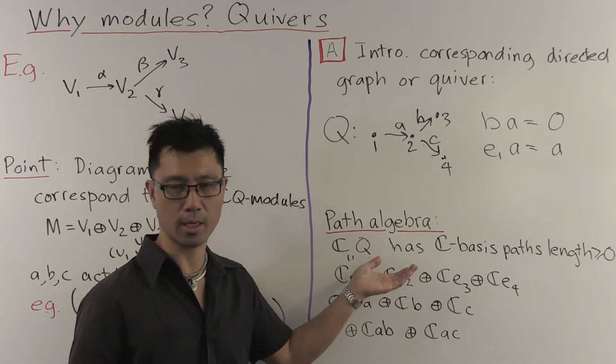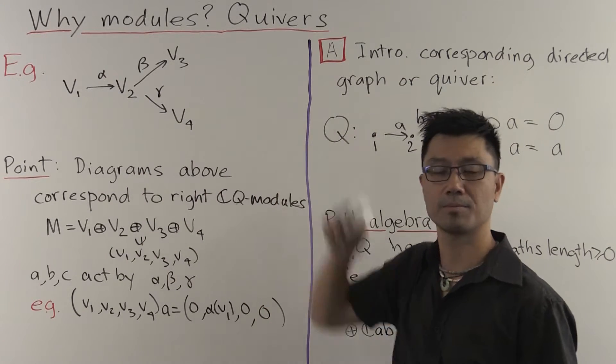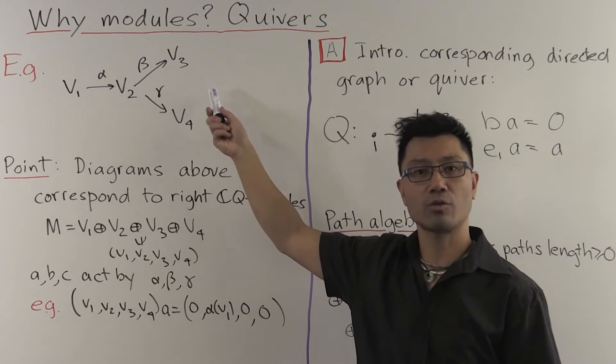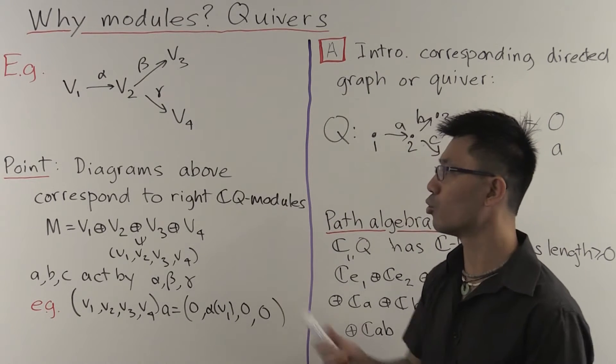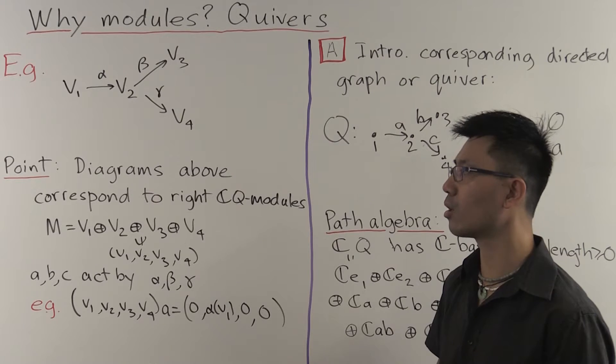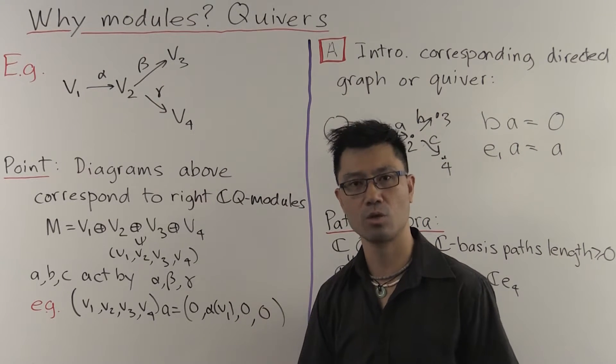And this defines a ring structure on this path algebra. So how does this ring help us study diagrams like this one here? Well, the point is the following. Diagrams such as this one here correspond precisely to right CQ modules.